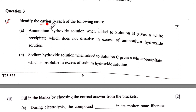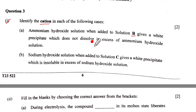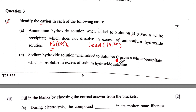The first part says: identify the cation in each of the following cases. Ammonium hydroxide solution when added to solution B gives a white precipitate which does not dissolve in excess of ammonium hydroxide. We know that a white precipitate which dissolves is zinc, but the white precipitate which will not dissolve is the hydroxide of Pb. So Pb(OH)2 will not dissolve in ammonium hydroxide. The cation is Pb, written as Pb²⁺, and that will give you full marks.